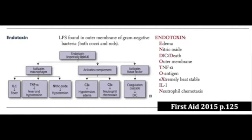Endotoxin is basically a molecule on the outside of the external cell membrane of gram-negative bacteria. Basically what it is is lipopolysaccharide — just a big molecule of fat and starch effectively.